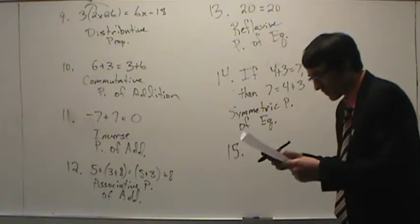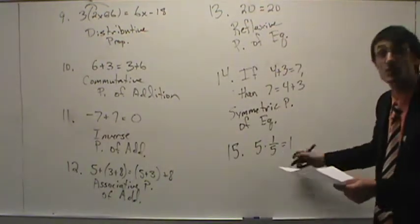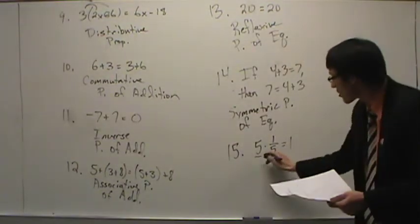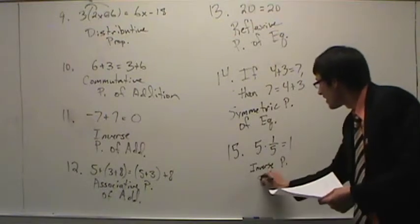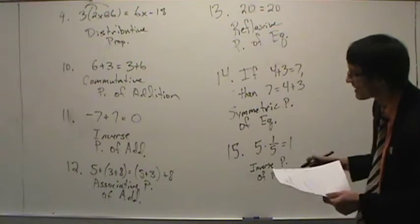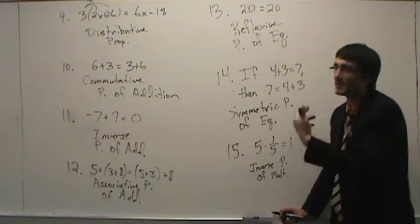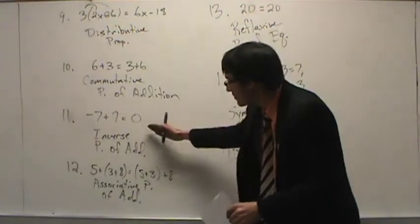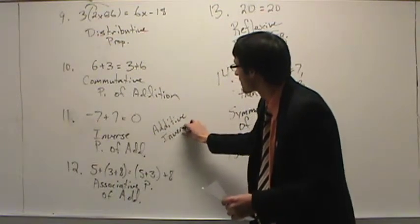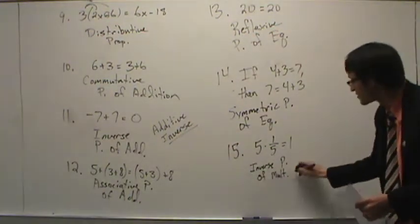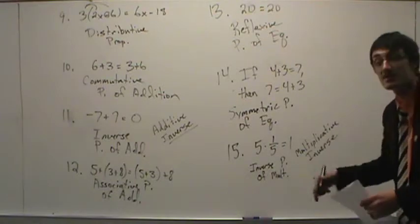Number fifteen: five times one-fifth equals one. Ones and zeros give a clue to either identity or inverse. We started with five — did we end with five? No. So this is not identity. This is the inverse property of multiplication. As a side note, the inverse property of addition can also be called the additive inverse, and the inverse property of multiplication can also be called the multiplicative inverse — that's another way it can be written on tests and quizzes.